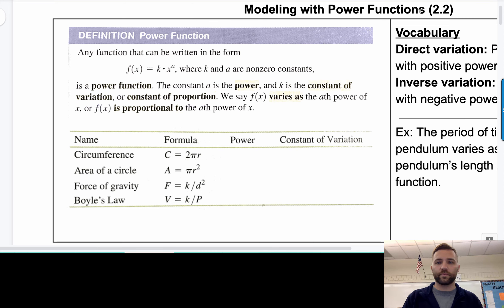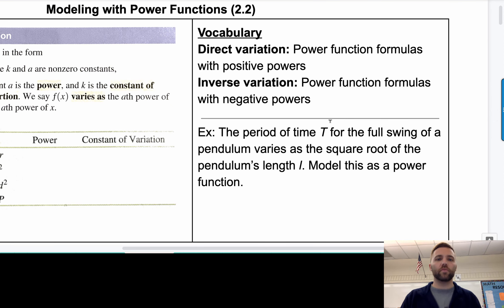Let's move on here. A little bit of vocabulary. Direct variation, those are types of power functions where the formulas have positive powers. Inverse variation are power function formulas with negative powers. So you can see the last two that we just did, those were inverse variation problems, or formulas. And the first two were direct variation formulas.